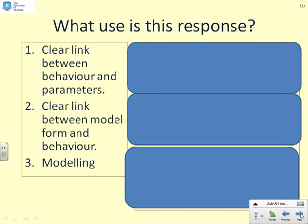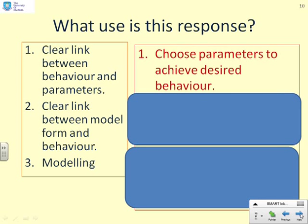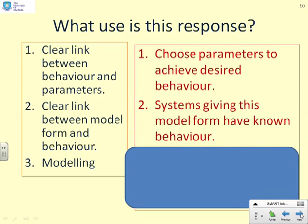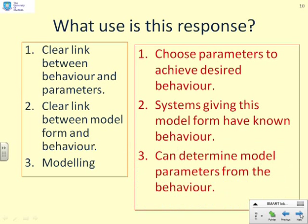So what use is this response? There's a clear link between the behavior and the parameters. It means that we can actually choose the parameters to achieve the desired behavior because we know exactly what impact those parameters have on the behavior. We know that K gives us the steady state. We know that T takes the speed of the exponential. We also recognize that systems of a given form must all have the same behavior. Any system which I can write down as a first-order model must all have solutions of this form. They go from the initial condition to the steady state following an exponential curve. And finally, we can estimate the model parameters from the behavior. If you don't know K and T, but you can do a step response of a real system and you know the underlying model is first order, you can estimate K and T from that response.